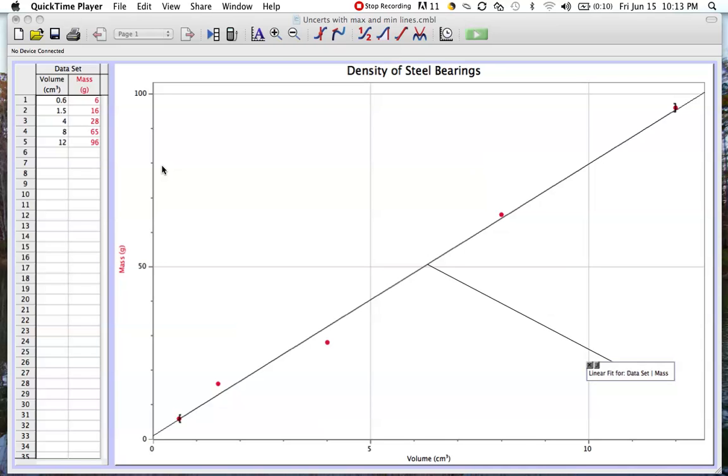In this lesson you're going to learn how to add uncertainty bars to your graph and also your lines of maximum and minimum slopes. As you can see, we've started with just a basic graph. In this case, density, where we've got the mass in grams on the y-axis and our volume in cubic centimeters on the x-axis.